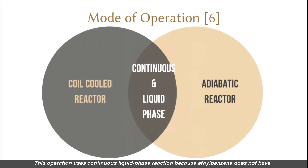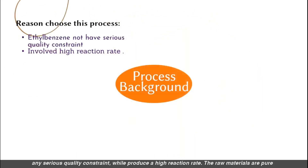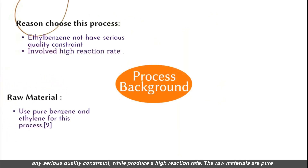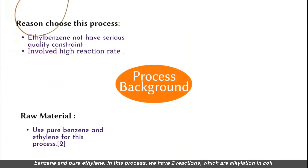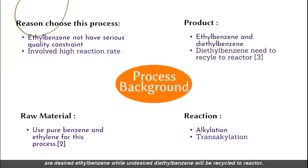This figure shows a few applications of ethyl benzene. This operation uses a continuous liquid phase reaction because ethyl benzene does not have any serious quality constraints while producing a high reaction rate. The raw materials are pure benzene and pure ethylene. In this process, we have two reactions: alkylation in a coil-cooled continuous stirred tank reactor (CSTR) and transalkylation in an adiabatic CSTR.